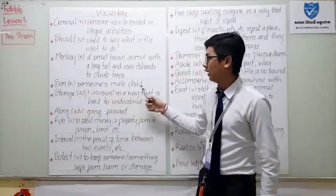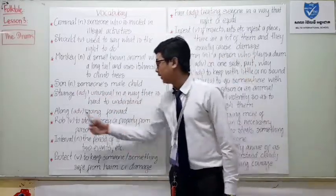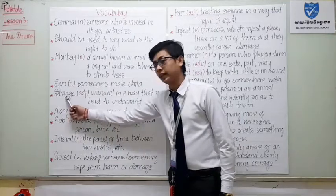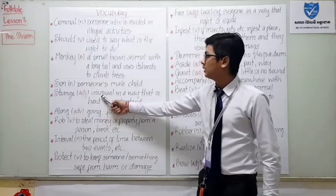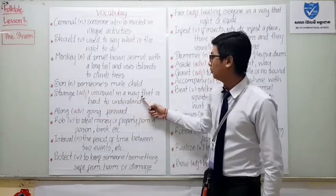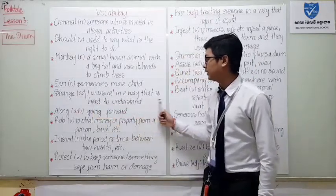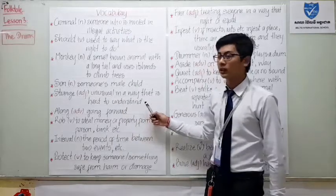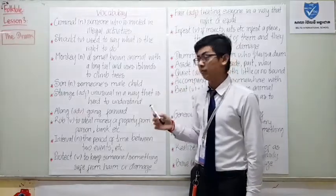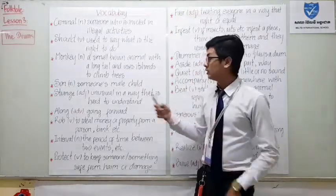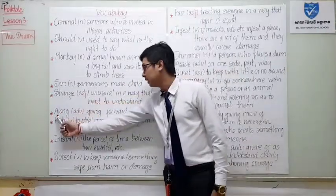Next word is 'son.' Son. Function: noun. Meaning: someone's male child. Next word is 'strange.' Strange. Function: adjective. Meaning: unusual in a way that is hard to understand. For example: 'It is a strange marker that I have never seen before.'